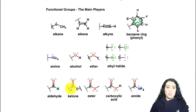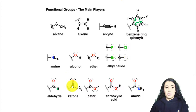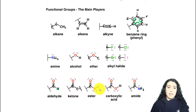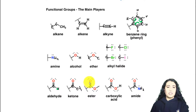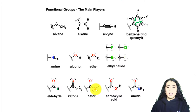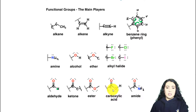Whereas if the carbonyl group is in the middle of the chain somewhere — not on one of the ends, so the chain continues on both sides — and we see a carbonyl somewhere in the middle, we call that a ketone instead of an aldehyde. Next we have an ester, which is when we have a double bond between carbon and oxygen — again the carbonyl group — but that carbon is also going to be bound to an oxygen atom.